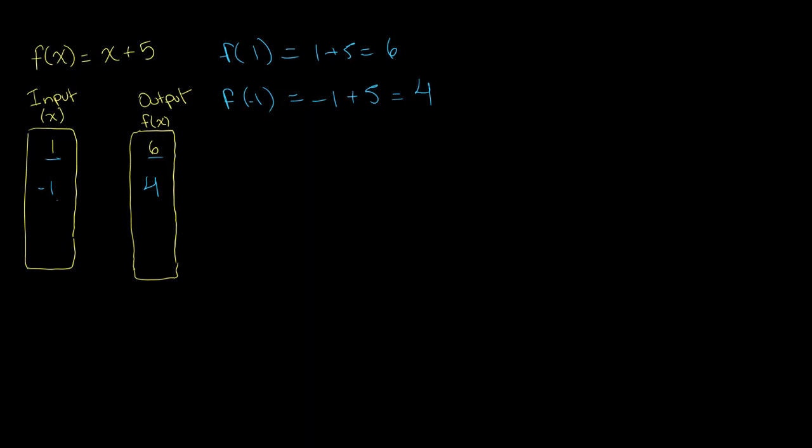What we're basically doing is taking our input, performing our function f on it to get our output. We're taking input 1, performing f on 1 to get output 6. Same thing here—we're performing f on -1 to obtain an output of 4.